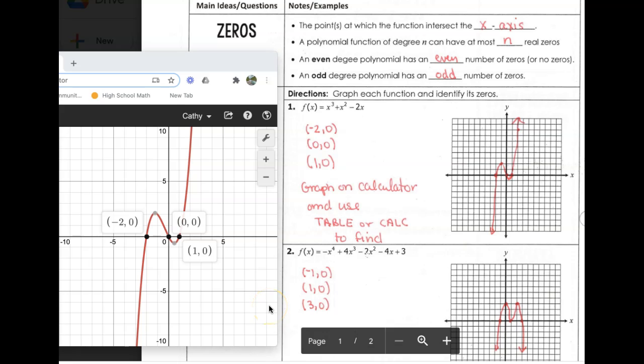Today we want to talk about the zeros of polynomials. The zeros are the points at which the function intersects the x-axis. A polynomial function of degree n can have at most n real zeros.